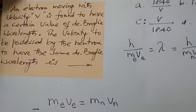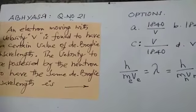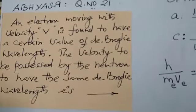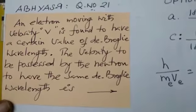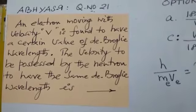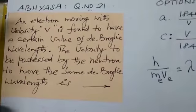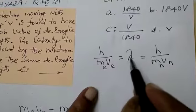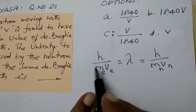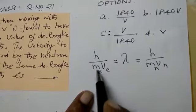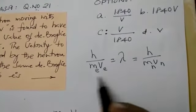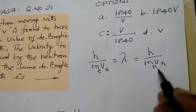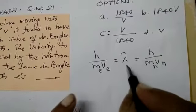This is Chapter 9, question number 21. An electron moving with the velocity of V is found to have a certain value of de Broglie wavelength. The velocity to be possessed by the neutron to have the same de Broglie wavelength. Now we are having two particles. Here it is written. Electron has de Broglie formula. What is de Broglie formula? Lambda wavelength is equal to Planck's constant divided by the momentum, that is mass into velocity. So this is written for the electron which is having the wavelength of the lambda de Broglie. This is written for the neutron. And we both are having the same wavelength.